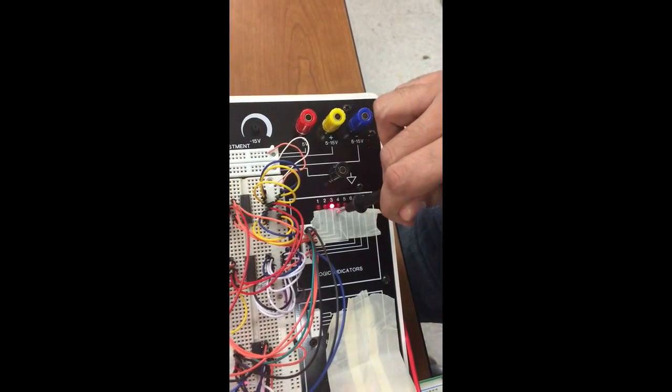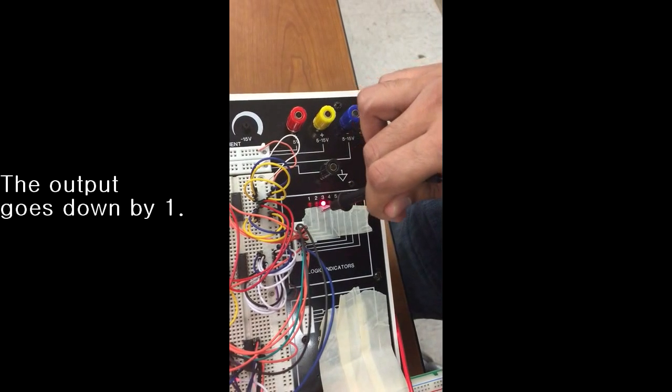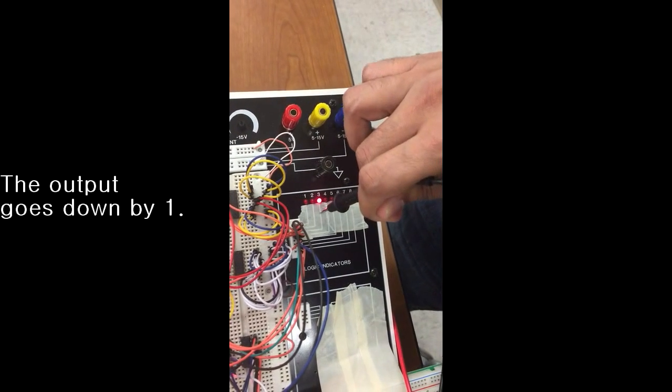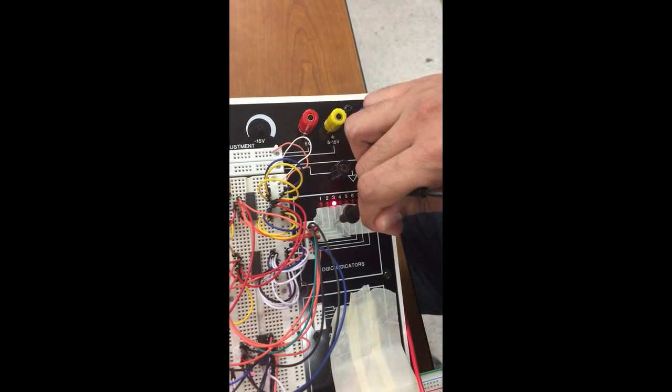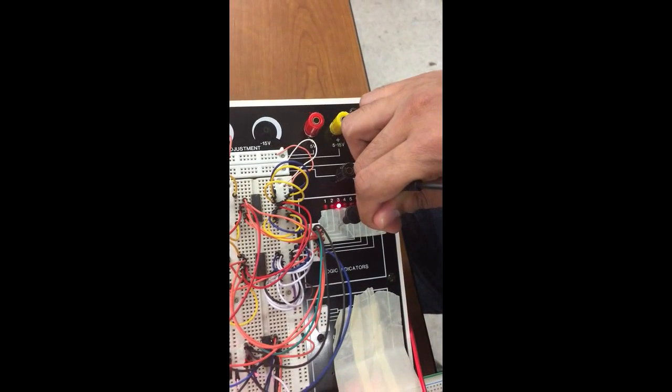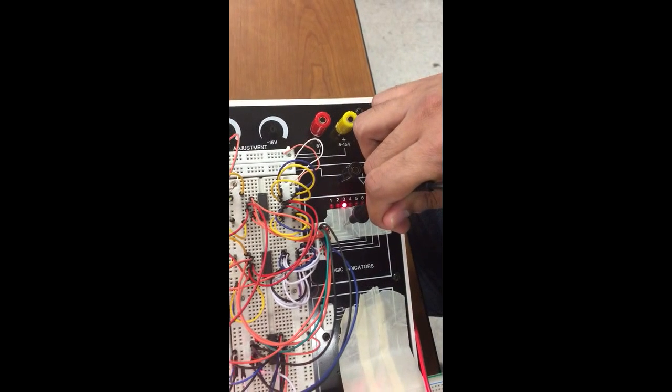Earlier it was 0, 0, 1, 1 and now it's 0, 0, 1, 0. So earlier it was 3, now it's 2. Our circuit counts down as well. This concludes our video, our circuit which counts up and countdown works. Thank you.